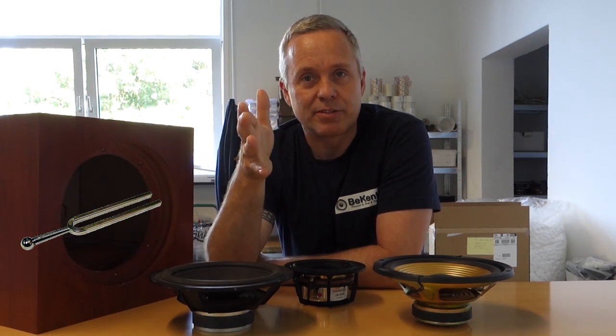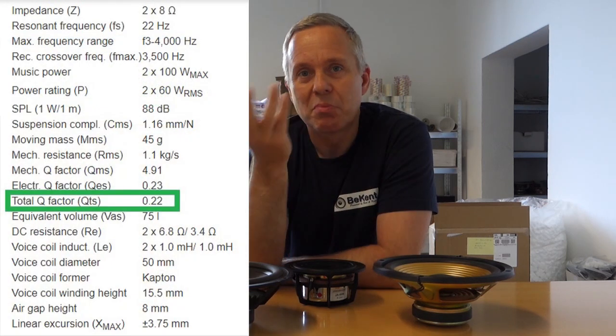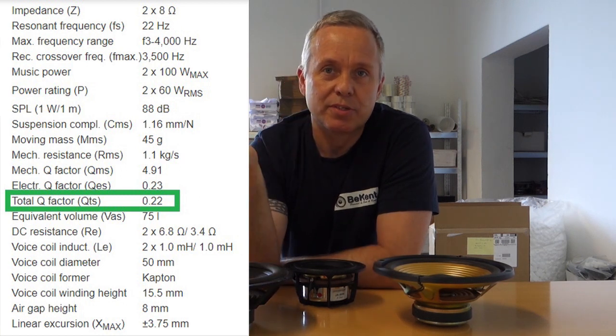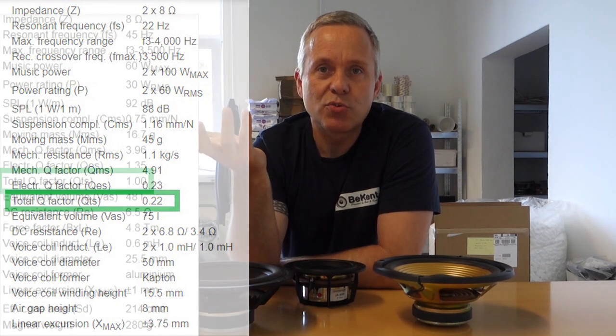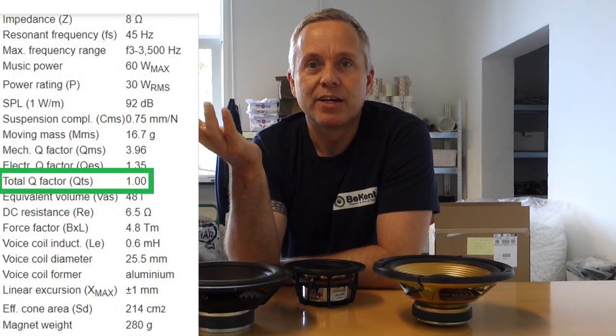A tuning fork has a Q value of about a thousand. When you look in the data for a woofer — the Thiele-Small parameters — you see that the values are typically from 0.2 to maybe 1.2, and 1.2 is a fairly high QTS.